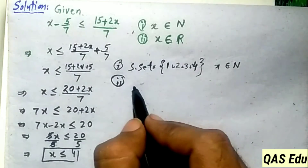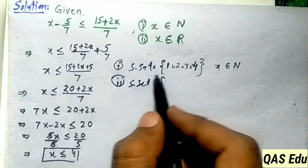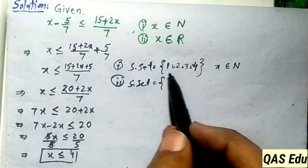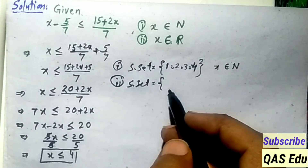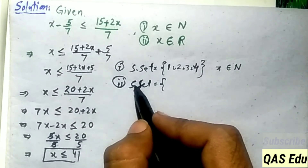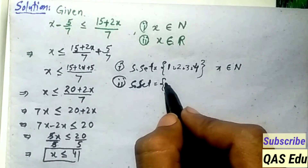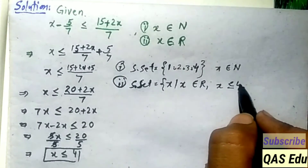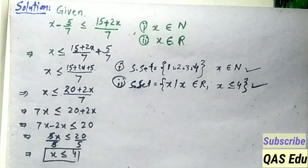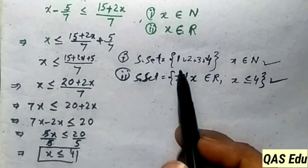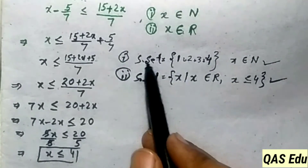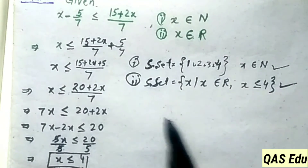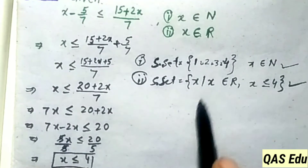Now applying both conditions. For x belonging to natural numbers: natural numbers less than or equal to 4 are {1, 2, 3, 4}, so this is the solution set. For x belonging to real numbers: all real numbers less than or equal to 4 satisfy the inequality. We plot both solution sets on the number line.